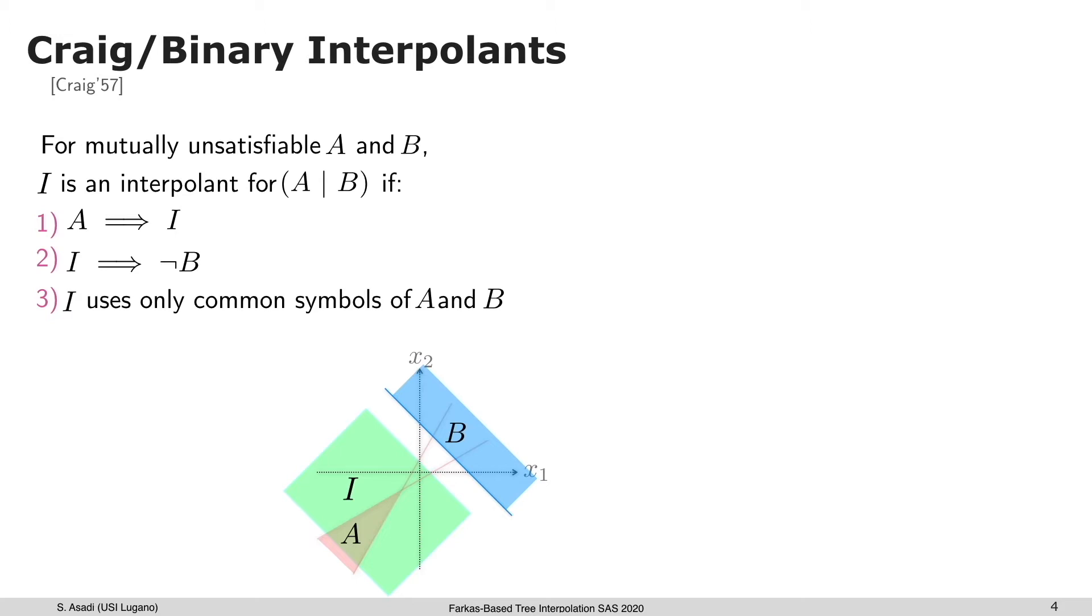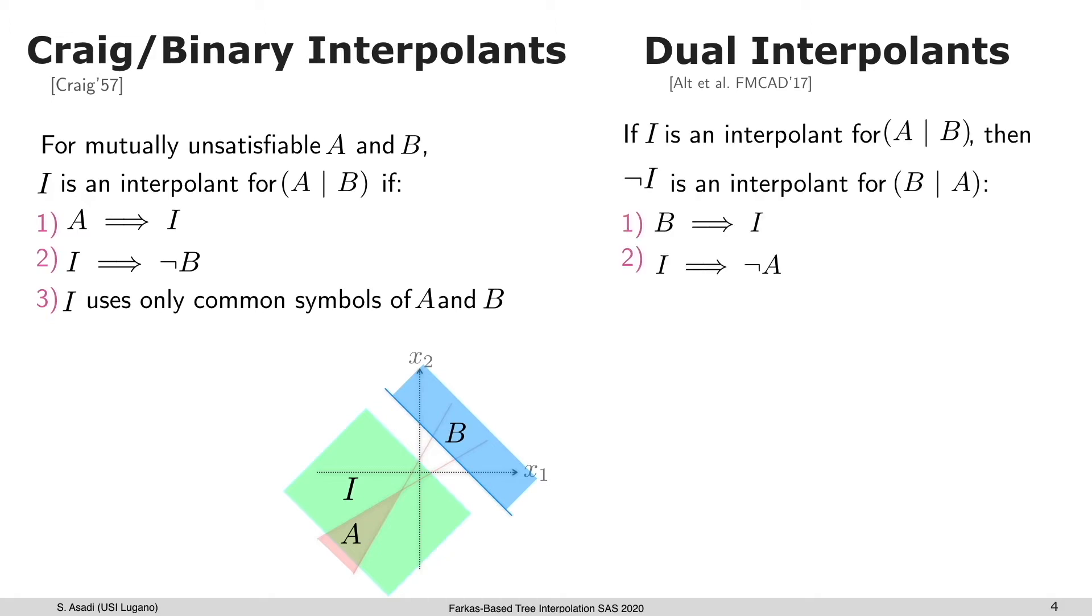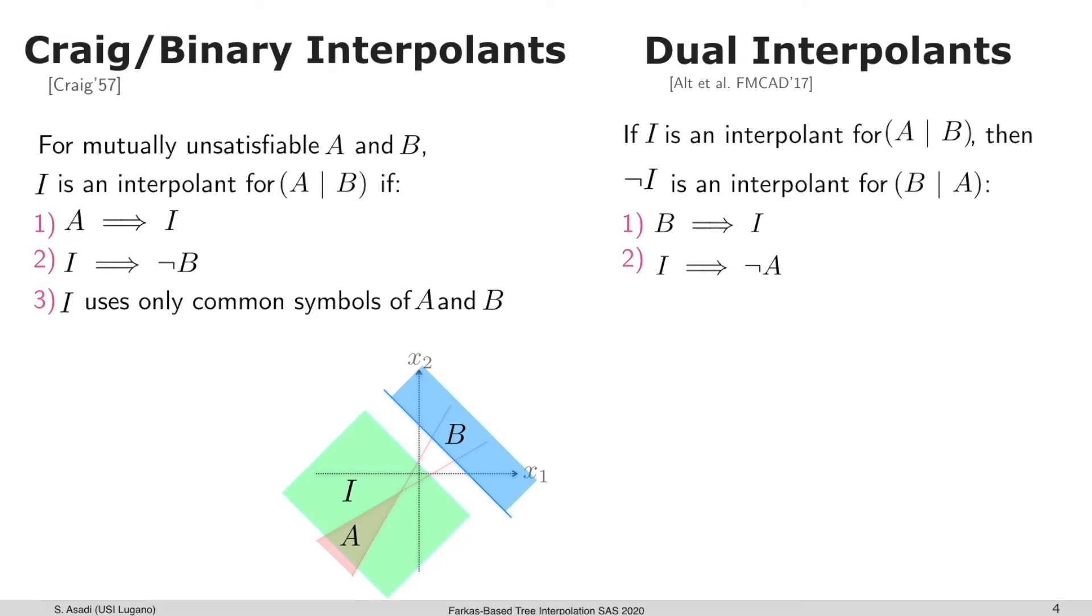One easy way would be to use the dual interpolant concept. The idea is if I is an interpolant for A with B, then the negation of I is also an interpolant for B with A, and there are logical relations between the primal interpolant and its dual.